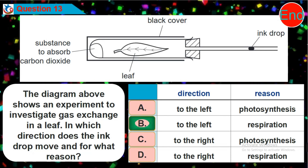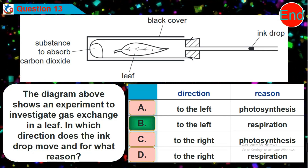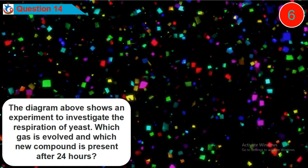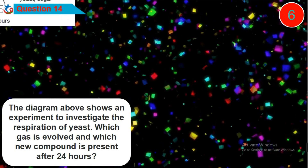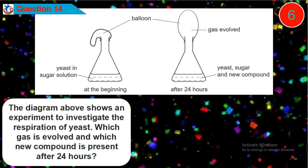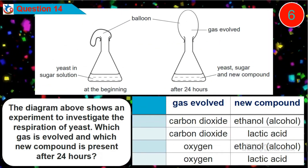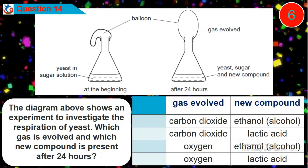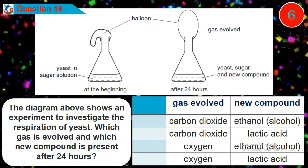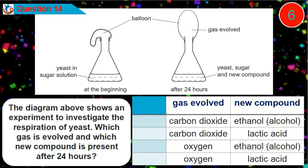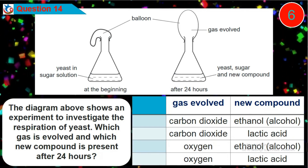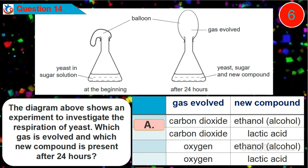Question 14: The diagram shows an experiment to investigate the respiration of yeast. Which gas is evolved and which new compound is present after 24 hours? Is it option A, B, C, or D?